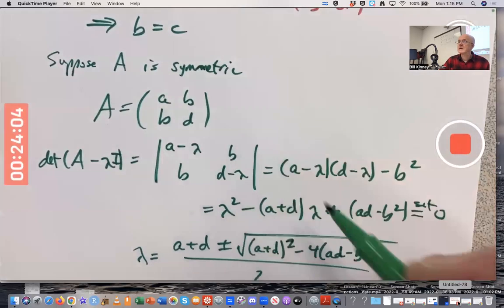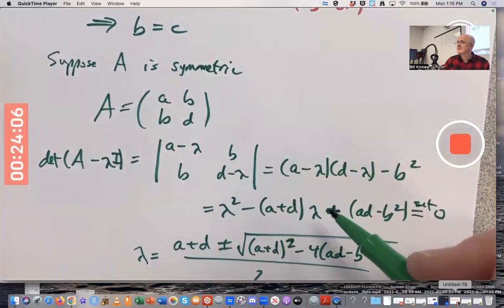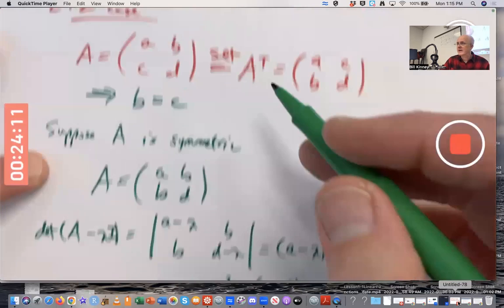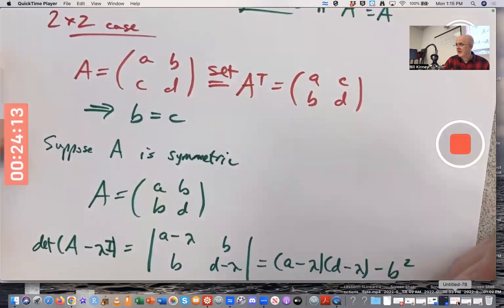If A is symmetric, you always have real eigenvalues. In the 2x2 case, at least, we verified it. It's actually true in the general case, too. But that would be harder to prove.